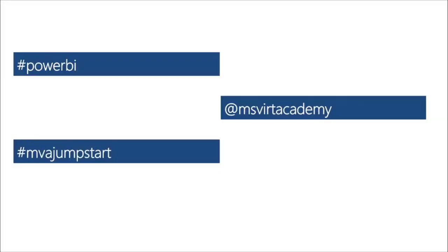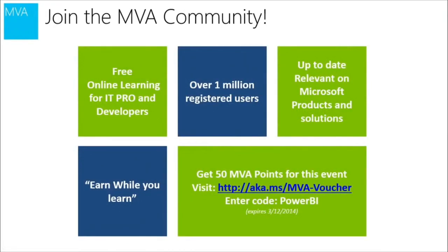Then we're going to bridge that off with capabilities we have in terms of data management gateway, how we refresh to on-premise data. Then we'll wrap it up and look at how you can get access and get started with Power BI. Feel free to use the hashtag Power BI or hashtag MVA Jumpstart. You can also include the Microsoft Virtual Academy, who's been a generous host for this event. If you're not part of the Microsoft Virtual Academy community yet, we've got over 1 million registered students and users. You can get points for every activity on the event. We have a special code for the Power BI event — the code you need to enter is Power BI.